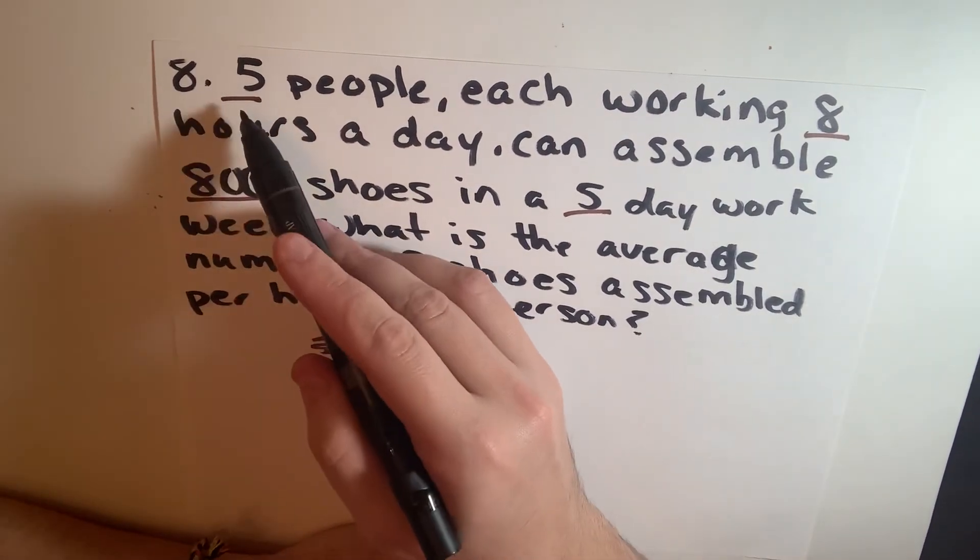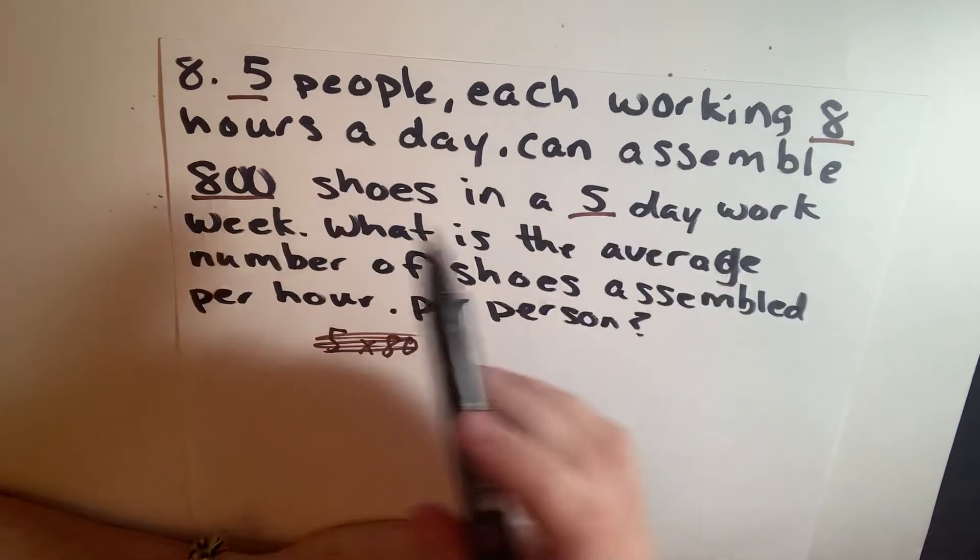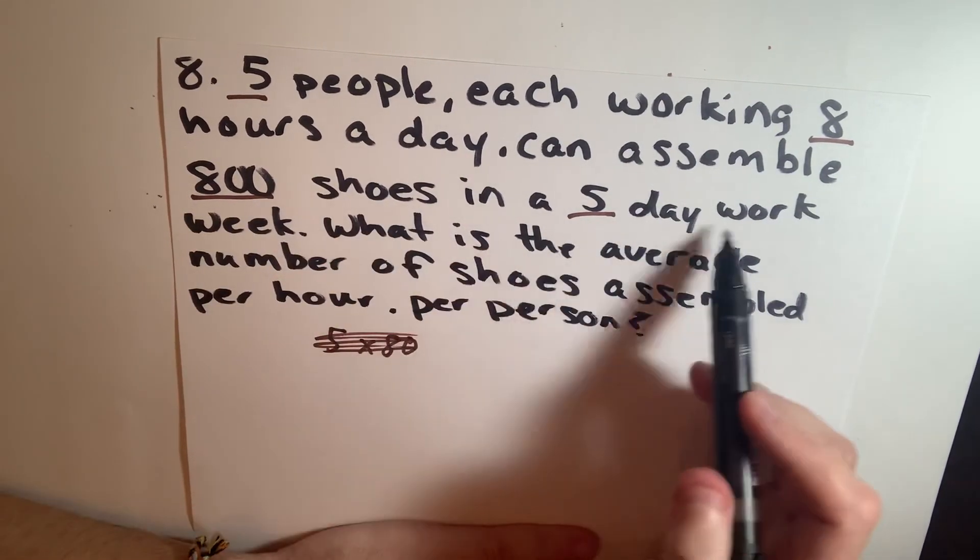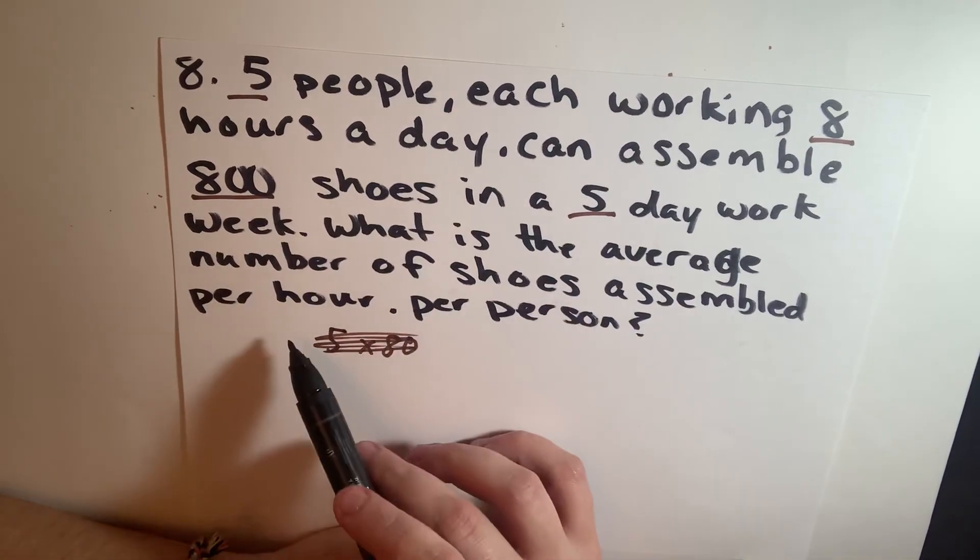For question number eight, it says five people each working eight hours a day can assemble 800 shoes in a five-day work week. What is the average number of shoes assembled per hour per person?